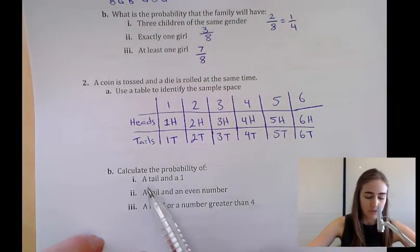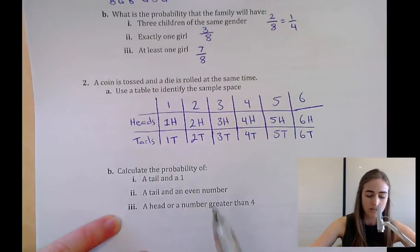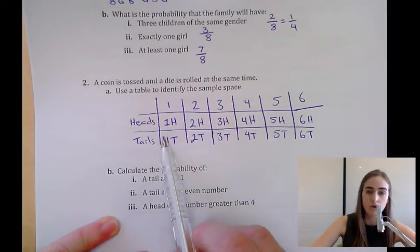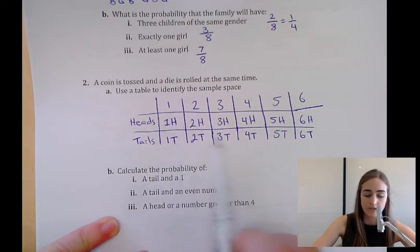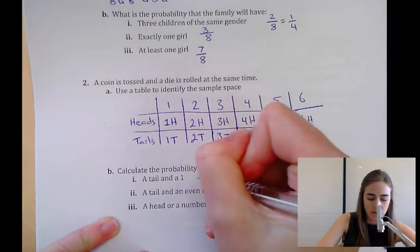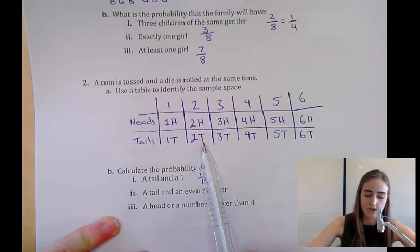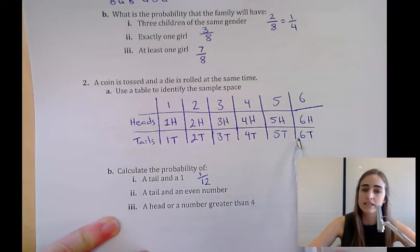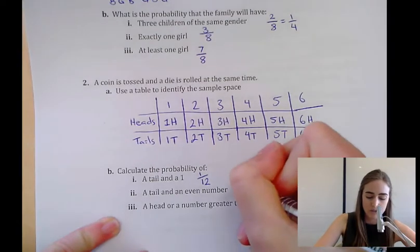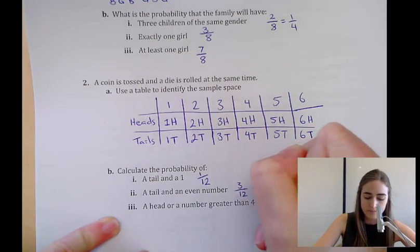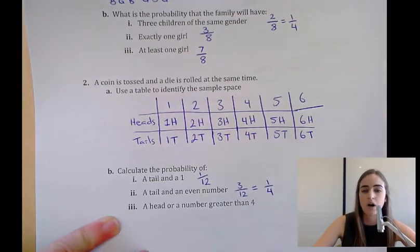Calculate the probability of a tail and a one. A tail and a one only occurs once out of 12, so that would be 1/12. A tail and an even number could be tail and two, tail and four, or tail and six. That would be 3/12, which simplifies down to one in four.